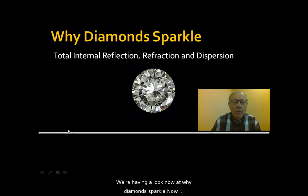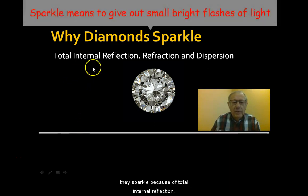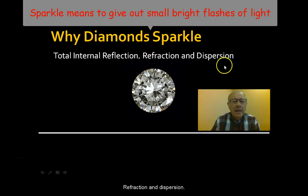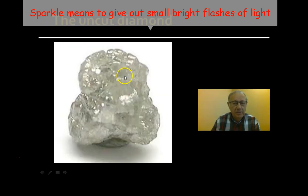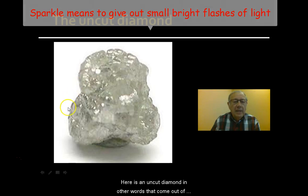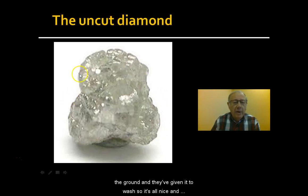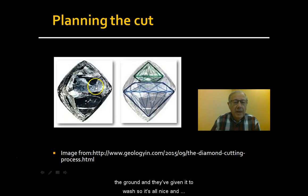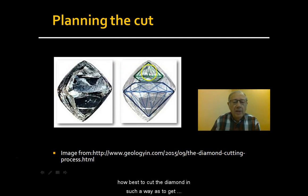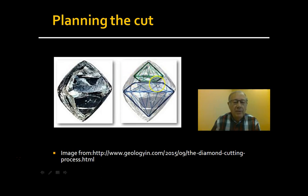We're having a look at why diamonds sparkle. They sparkle because of total internal reflection, refraction, and dispersion. Here is an uncut diamond — it's come out of the ground and been given a wash so it's all nice and clean. The next stage is to decide how best to cut that diamond in such a way as to get the maximum amount of jewelry out of it.